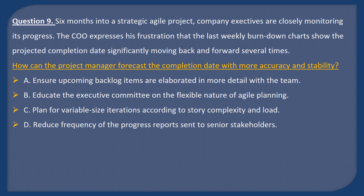Question 9. Six months into a strategic Agile project, company executives are closely monitoring its progress. The COO expresses frustration that the last weekly burn-down charts show the projected completion date significantly moving back and forward several times. How can the project manager forecast the completion date with more accuracy and stability? A: Ensure upcoming backlog items are elaborated in more detail with the team. B: Educate the executive committee on the flexible nature of Agile planning. C: Plan for variable-sized iterations according to story complexity and load. D: Reduce frequency of the progress reports sent to senior stakeholders.